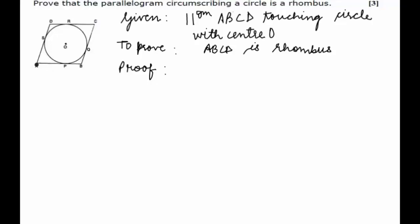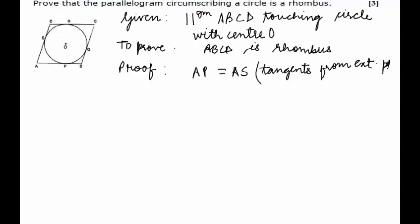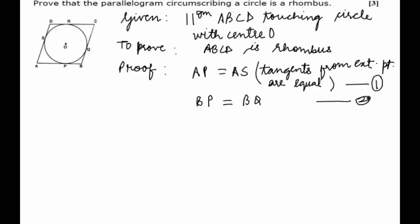So from point A, AS and AP are the tangents to the circle with center O. Therefore AP equals AS — tangents from an external point are equal. Let's call this equation number one. Similarly, from point B we can say that BP equals BQ, with the same reason. Let's call this equation number two.